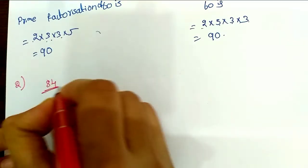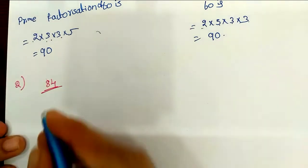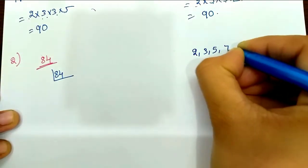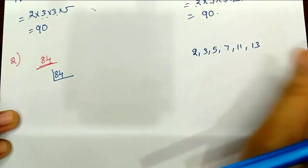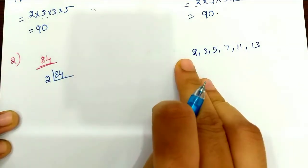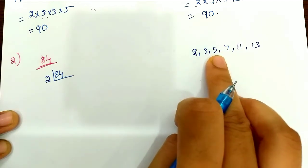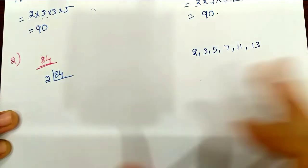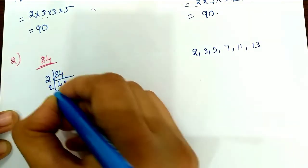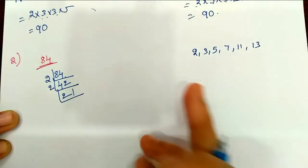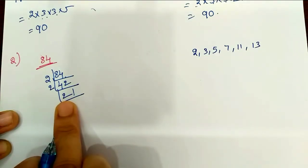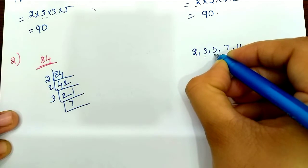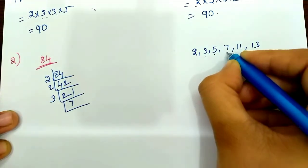Now we have to do the division factorization of 84. We start with prime numbers in order: 2, 3, 5, 7, 11, 13. We divide: 2 divides 84, 2 divides 42, 2 divides 21... then 3 divides. Then 4, 6 — continuing the division. For 21, the table of 7 gives 7 times 3 is 21. Next, 7 divides 7 to give 1.